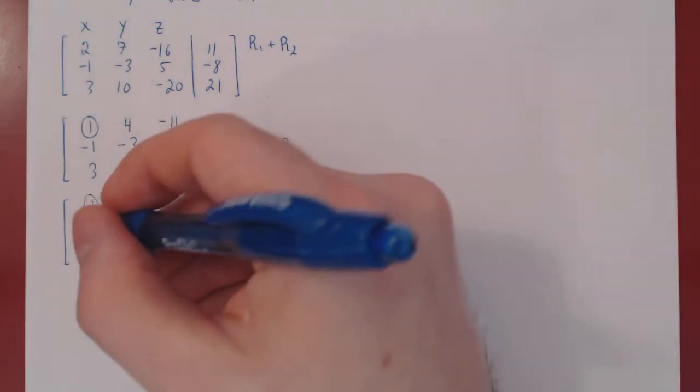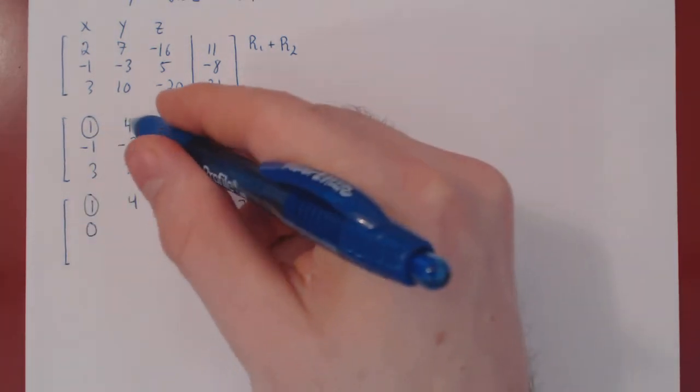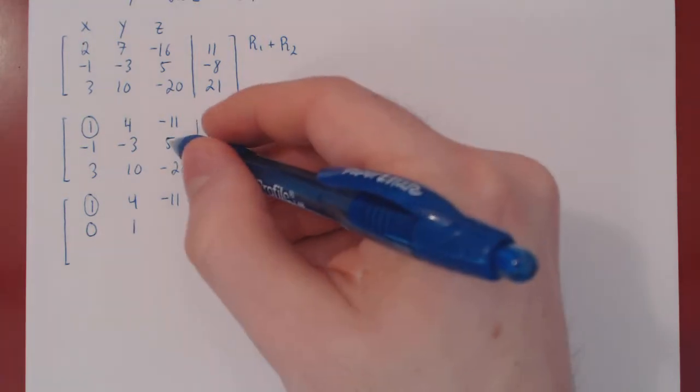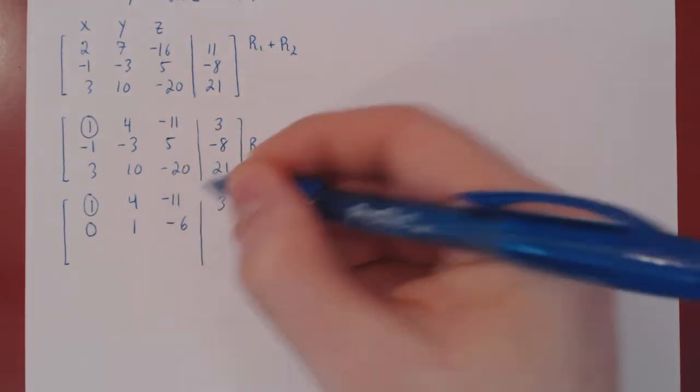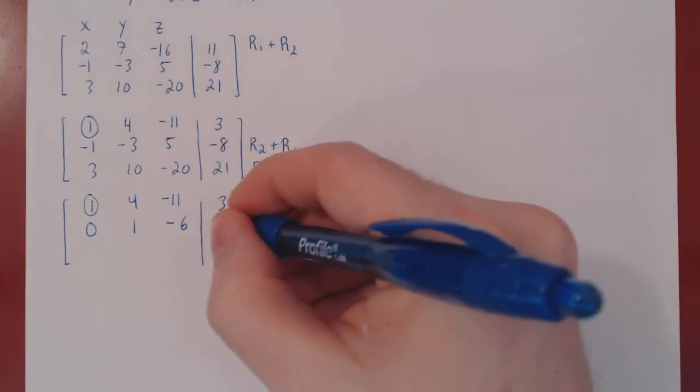So negative 1 plus 1, 0. Negative 3 plus 4, positive 1. 5 plus negative 11, negative 6. Negative 8 plus 3, negative 5.